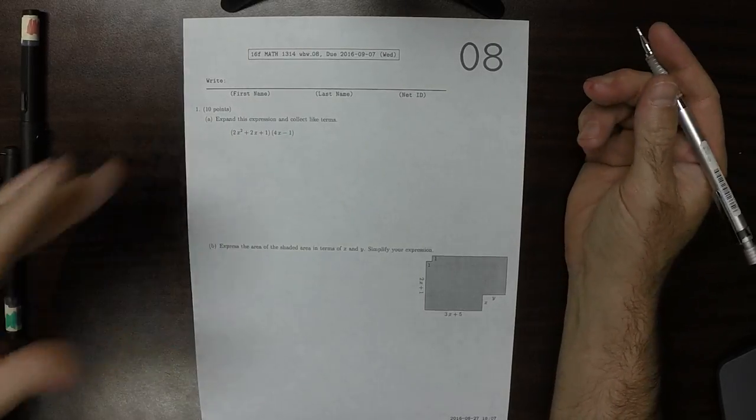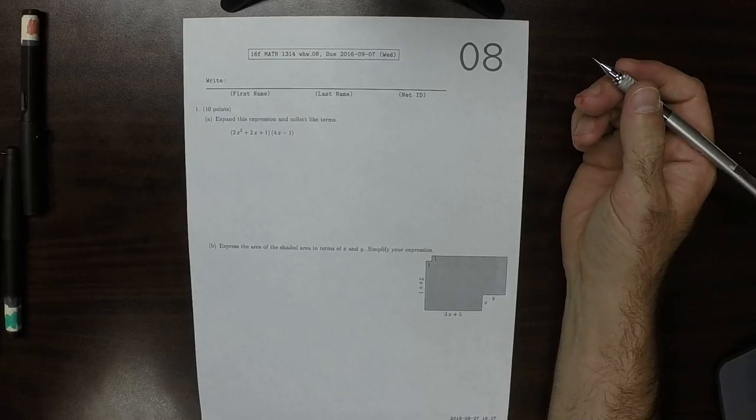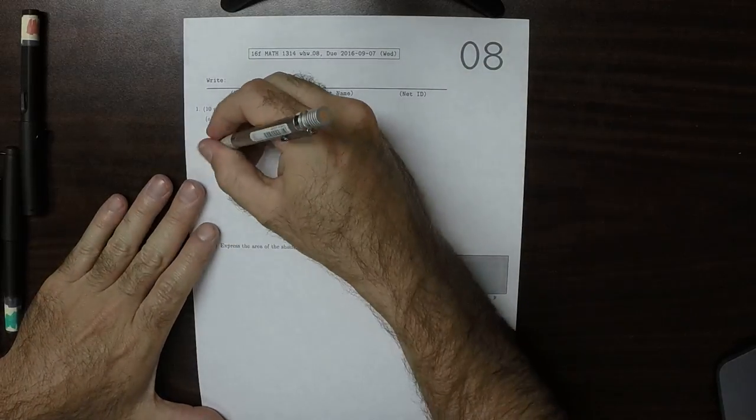This is the solution to written homework 8. So in part A, you're asked to multiply and collect like terms.